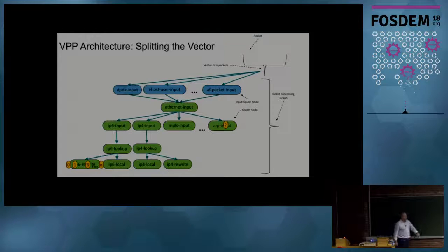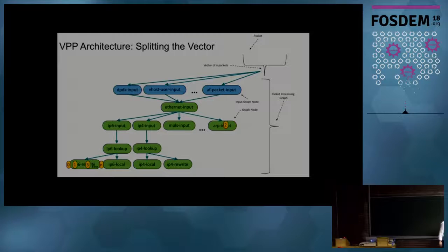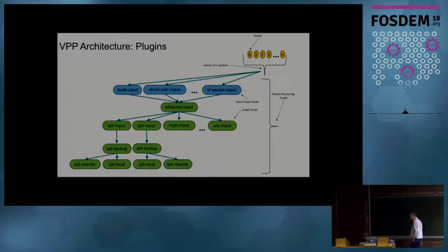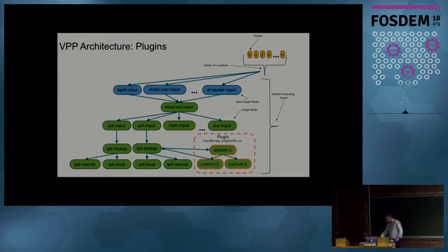Of course, you may have vectors that do not all go through the same path in the graph. For example, an ARP packet won't follow the same path as an IPv6 packet. We are not saying all packets have to go through the same path in this graph.